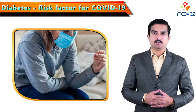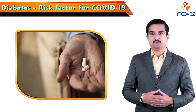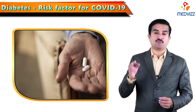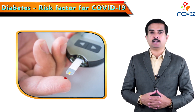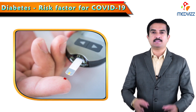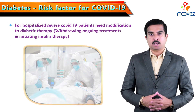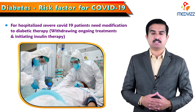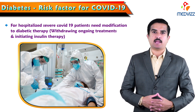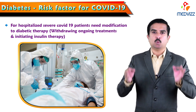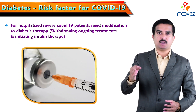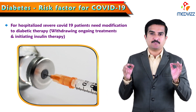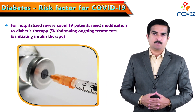In the presence of mild COVID-19, meaning in an outpatient setting, usual glucose-lowering therapies for patients with diabetes could be continued if the patient eats and drinks adequately and a more frequent blood glucose monitoring regimen is implemented. However, patients admitted to hospital for severe COVID-19 might need modification to their diabetic therapy, including withdrawing ongoing treatments and initiating insulin therapy.